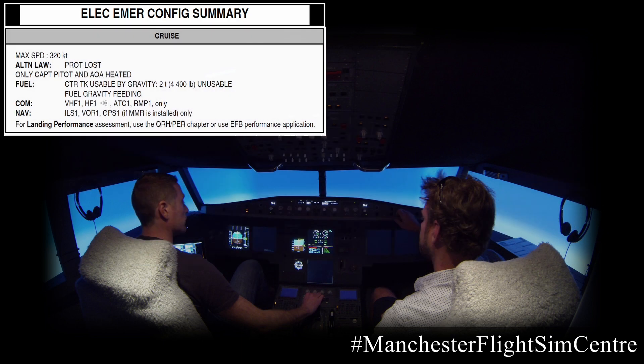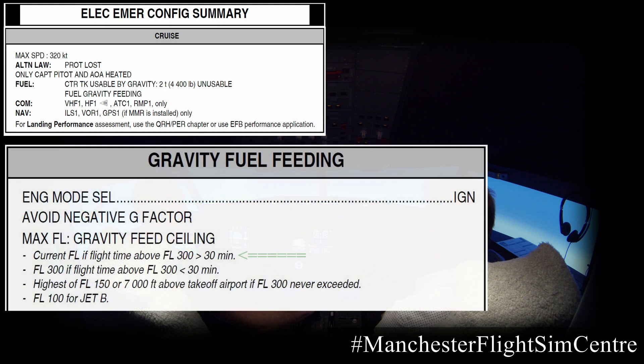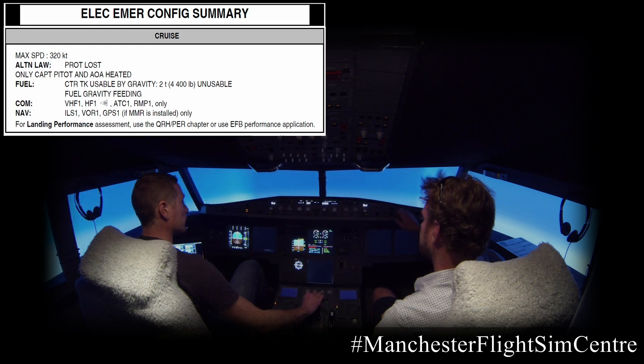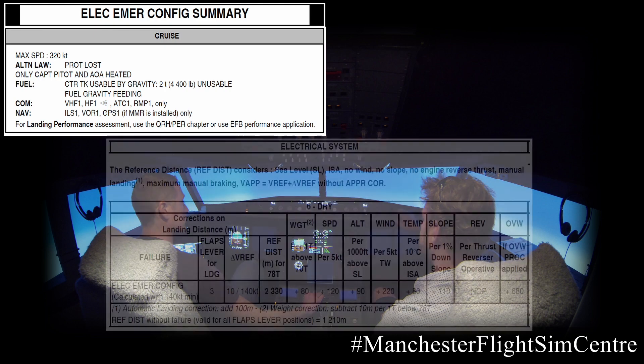First, we will look at the cruise phase. Fuel: during the ECAM procedure, we established our fuel gravity ceiling and we know we can maintain flight level 320 for the remainder of the flight. There is a note about the centre tank being unusable by gravity. Given we're in the later stages of the flight, at this point there's no fuel remaining in the centre tank.